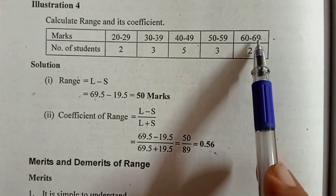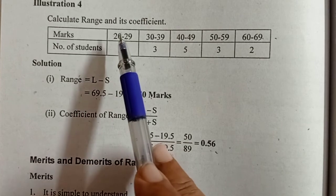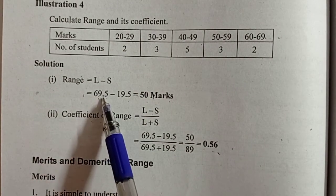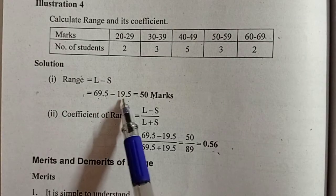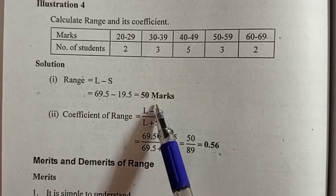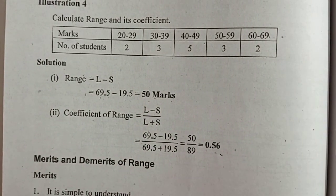The largest value is 69.5. The smallest value is 19.5. Range is equal to 69.5 minus 19.5, which is 50 marks. Coefficient of range is 50 divided by 89, which equals 0.56.